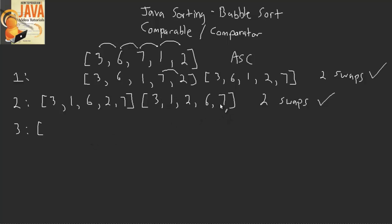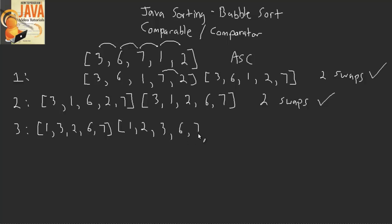Now we're left with three, one, two, six, seven. We check three and one: is three less than one? No, so we swap. That gives us one, three, two, six, seven. Then three and two: is three less than two? No, so we swap. That gives us one, two, three, six, seven. Then three and six: is three less than six? Yes. Is six less than seven? Yes. So we've done two swaps in this iteration, and since there were swaps, we need to do one more pass.